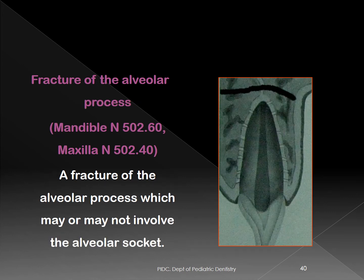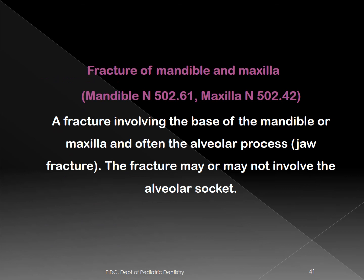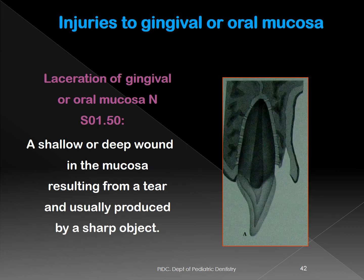Fracture of the alveolar process occurs when the alveolar process becomes detached from the basal bone. Fracture of the mandible or maxilla involves the basal bone — often in combination with the alveolar process, as in a jaw fracture. The fracture may or may not involve the alveolar socket.